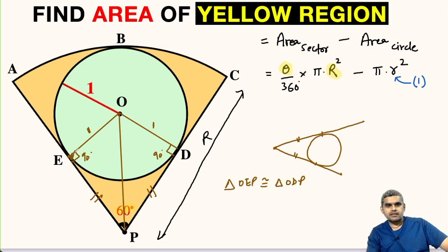This angle is 90, so this is also 90. This side is equal to this side and this side is equal to this side. Side angle side by side angle side we can say that these two triangles are congruent. If these two triangles are congruent then this angle must be equal to this angle. Overall the angle is 60 degree, so each angle must be 30 degree.